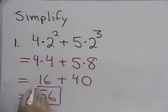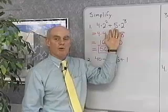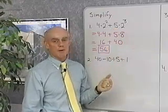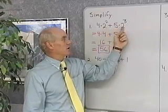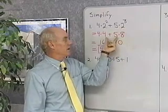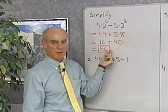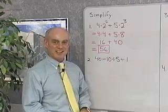So that's how we simplify this expression according to our rule for the order of operations. We want to take care of the part that has the exponents on it first, then we do multiplication, and finally we do addition. Let's look at our next example.